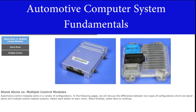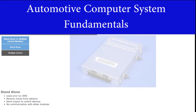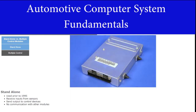Automotive control modules come in a variety of configurations. We will discuss the differences between two types of configurations: standalone and multiple control module systems. Standalone module control systems were used in vehicles produced before 1995. Standalone modules receive inputs directly from sensors and send outputs directly to the control devices. There was no communication or sharing of information with other modules within the vehicle.